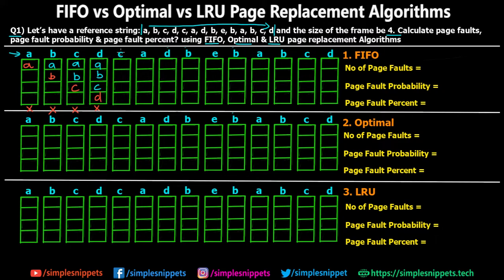Moving on to step five, the CPU wants page C. C is already there in the frame, so it's not a page fault — I'll mark a tick. Similarly for A, D, and B in the following steps — these pages are already in the frames. So A, D, and B result in no page fault scenarios. I'll just write the frames as A, B, C, D for each of those steps.